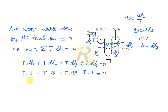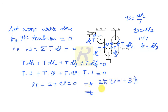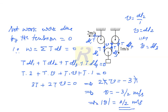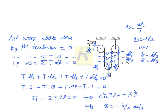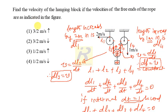This gives 3T plus 2Tv equals zero. Cancelling T, we get 2v equals minus 3, so v equals minus 3/2 meters per second. The magnitude is 3/2 meters per second. Both methods give the same answer. The pulley is moving up, not down, so the block also moves up. The answer is 3/2 meters per second upward — option one is correct.